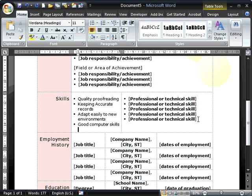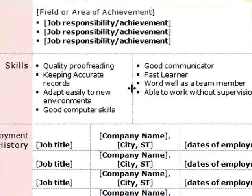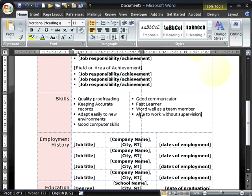I don't want this last one here either, so I'll drag over it to select it, press the delete key to remove it, and press backspace to remove that bullet point. When I hold my mouse pointer over the dashed line dividing the two cells, the pointer changes shape — I'll click and drag to the right to adjust it.